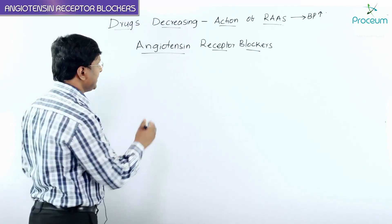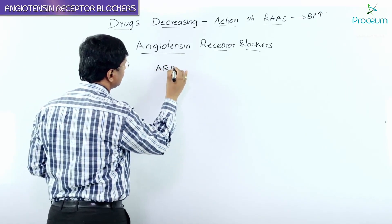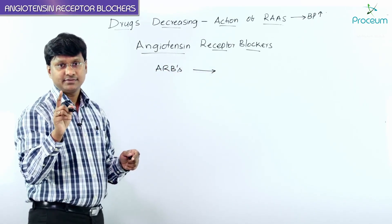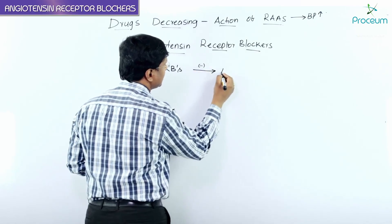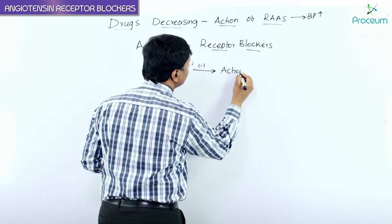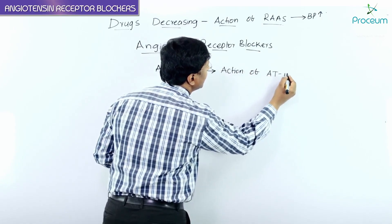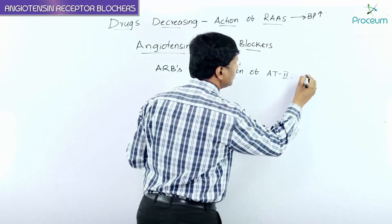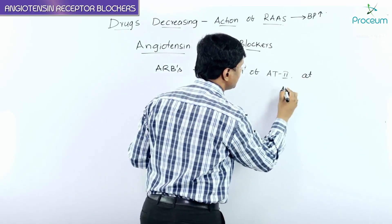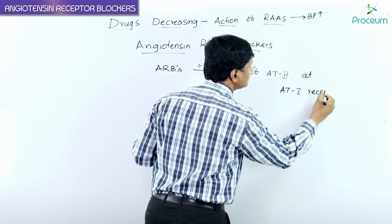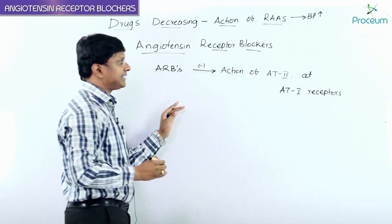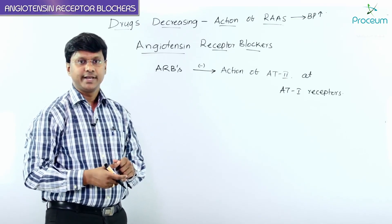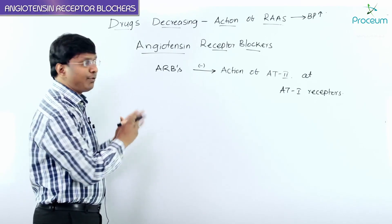How do they act? These ARBs act by antagonizing the action of Angiotensin 2 at the Angiotensin 1 receptors.